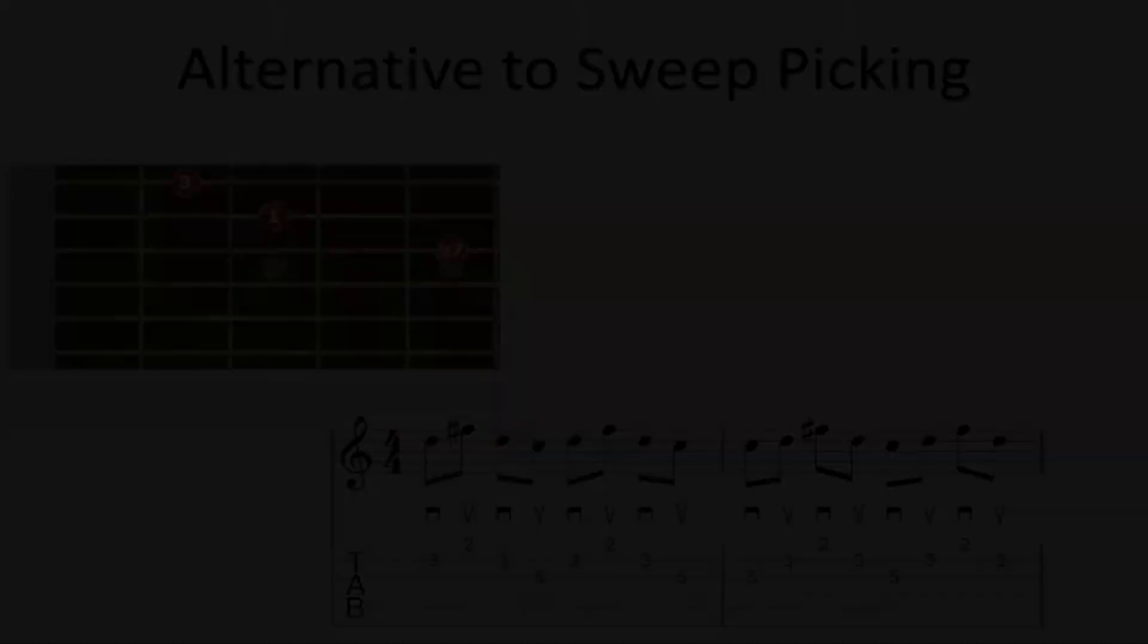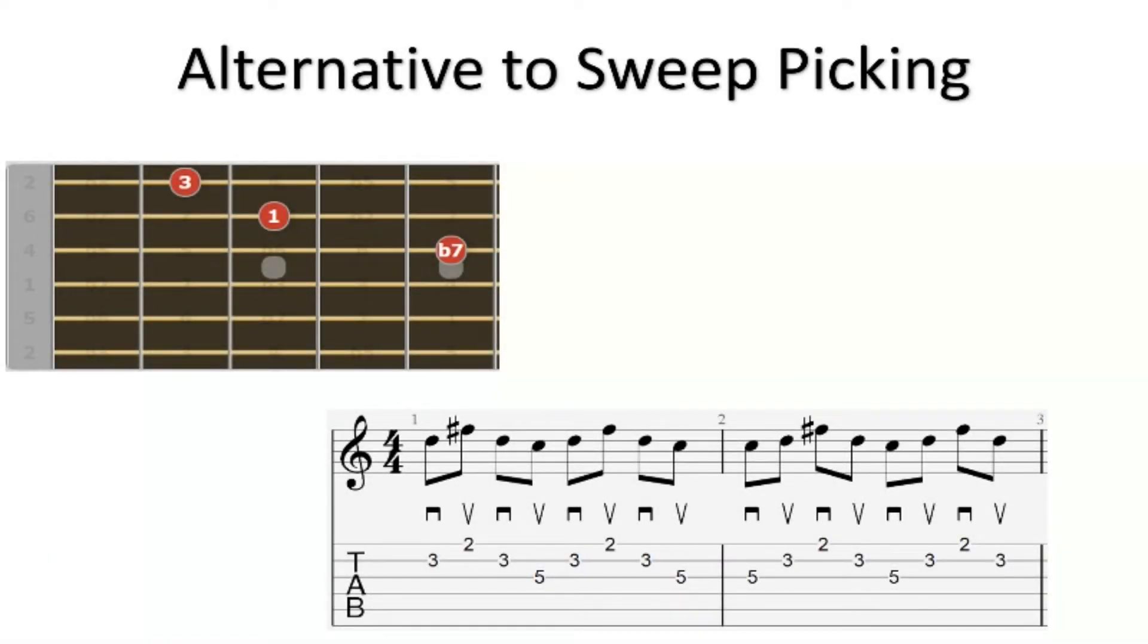Now let's talk about navigating the arpeggio. This exercise is great for developing alternate picking through string changes. Take any 3 consecutive notes of the arpeggio and practice keeping a consistent up and down strum throughout. Start on both the first and second note of the 3 notes to ensure you cover all possible picking directions.